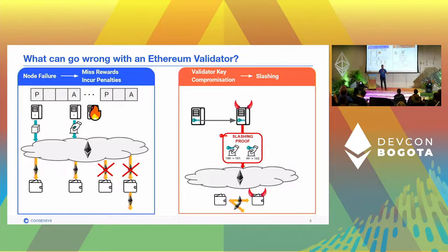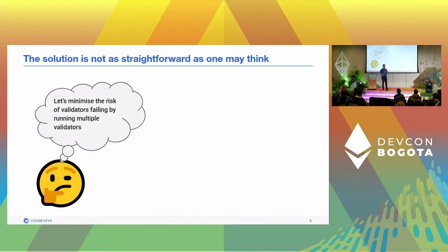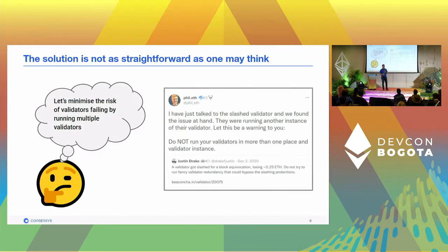While the malicious node doesn't have the withdrawal key, they can still get some of your funds. This is very bad — bad for you as a staker and bad for the network, because it means malicious actors can get more and more stake. The way to fix this is not as straightforward as one might think. The simplest idea is to run more than one Ethereum validator, but we know from the early days of the beacon chain this is the perfect recipe for getting yourself slashed.